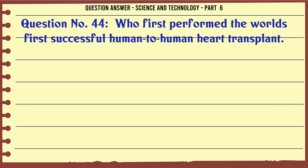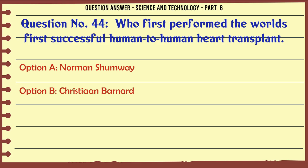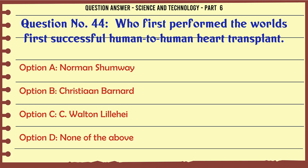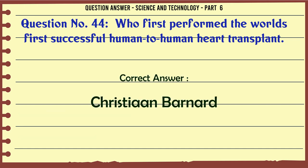Who first performed the world's first successful human-to-human heart transplant? A. Norman Shumway. B. Christiaan Barnard. C. Walton Lillehei. D. None of the above. The correct answer is Christiaan Barnard.